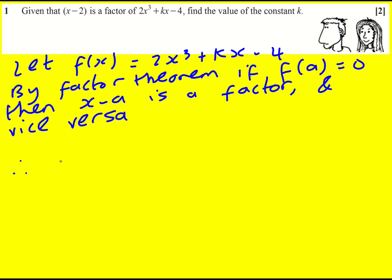And so therefore, f of 2, because we're told that x minus 2 is a factor, then f of 2 must equal 0.